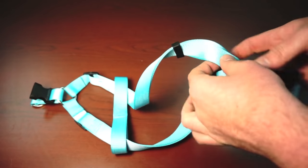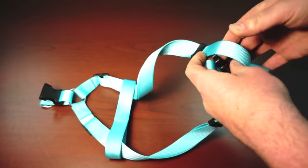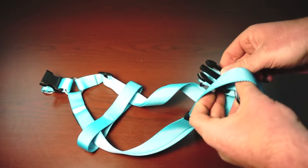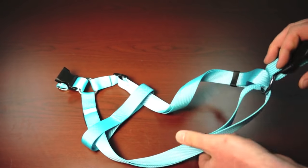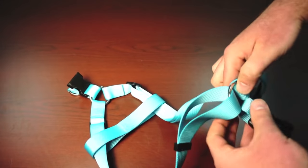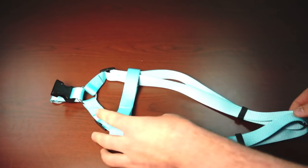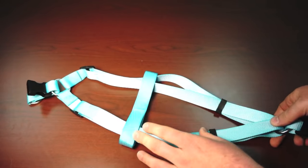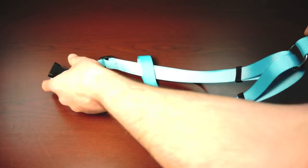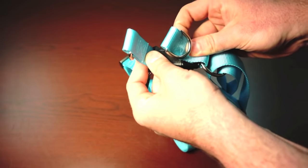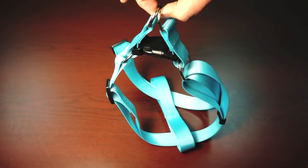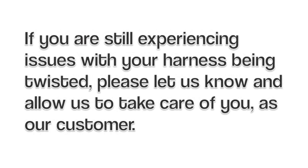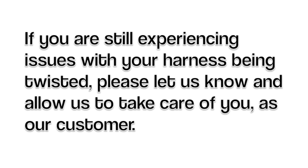So to correct this, we have to go back through each one of these, and untwist, and then the harness should buckle up correctly, and you're ready to attach the leash to the D-rings. Thank you.